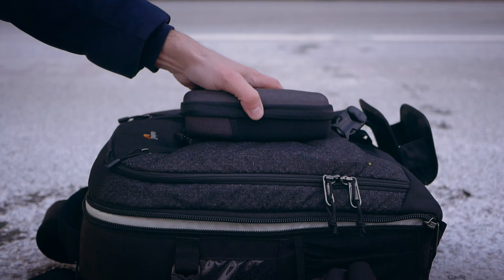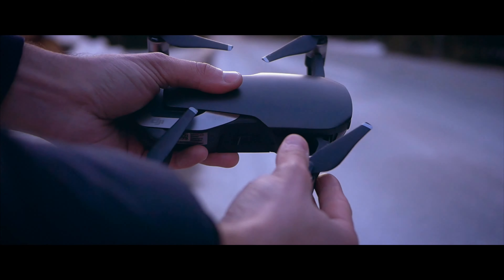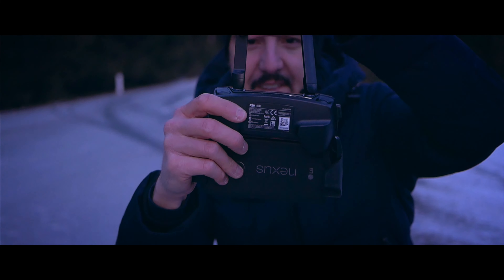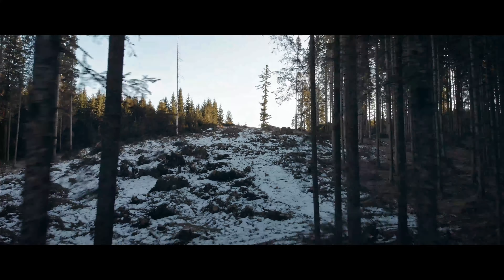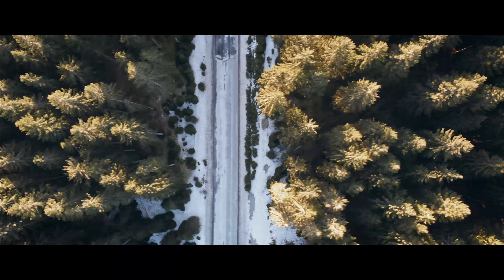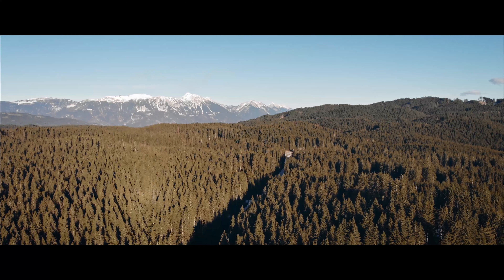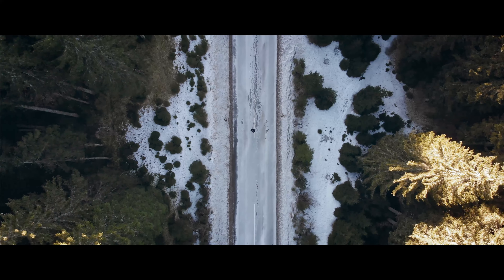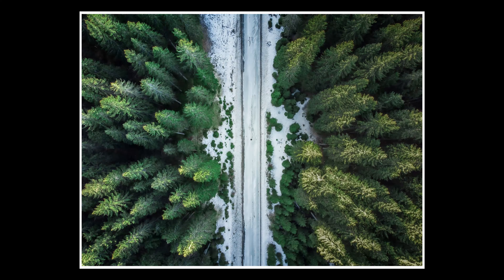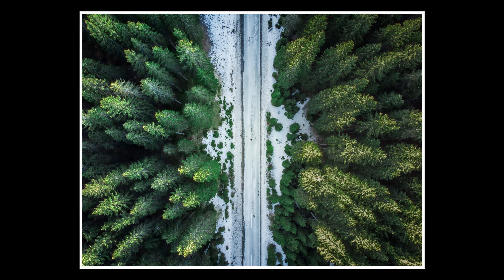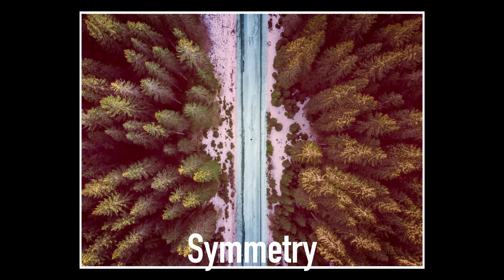Those are the three elements I want to cover today and I want to do them all in one shot. So how am I going to do that? There we go — we have the trees as leading lines, the road dividing the image into two halves symmetrically, and that little dot right there — well, that's me.